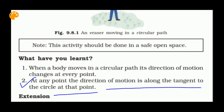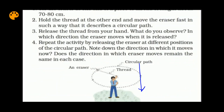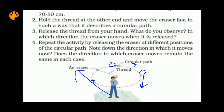We will also notice that at any point the direction of motion is along the tangent to the circle at that point. A tangent is any line that touches the circle at a single point only. So in this activity, the direction of motion of the object changes at every point on the circular track and is always along the tangent.